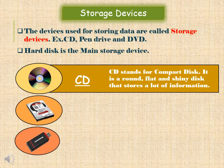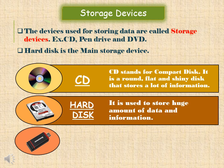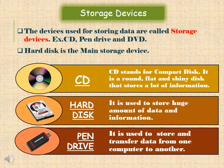CD stands for compact disk. It is a round, flat, and shiny disk that stores a lot of information. Hard disk — it is fixed inside the CPU box and stores a huge amount of information and data. Pen drive — it is a very small device used to store data and also for transferring data from one computer to another. It is also known as a flash drive.